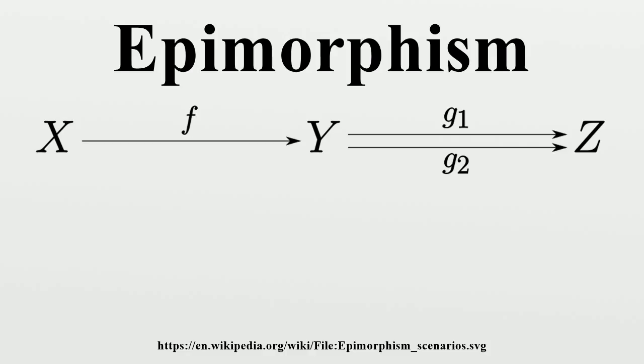As for most concepts in category theory, epimorphisms are preserved under equivalences of categories. Given an equivalence F: C→D, then a morphism f is an epimorphism in the category C if and only if F(f) is an epimorphism in D. A duality between two categories turns epimorphisms into monomorphisms, and vice versa.